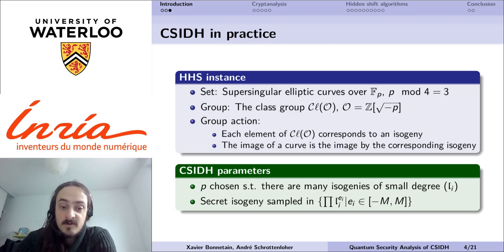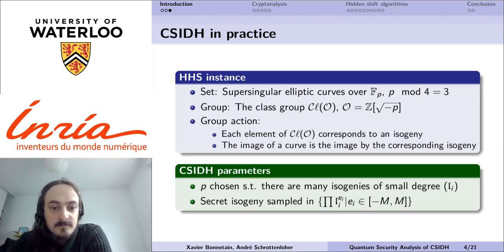For CSIDH, the concrete parameters are chosen such that there are many isogenies of small degrees that are available, and the secret isogeny is sampled as a product of these small isogenies up to a small power, so this power will be bounded by 10 in the proposed instances, and it is such that this set of secret isogenies shall almost span the whole set of possible isogenies.